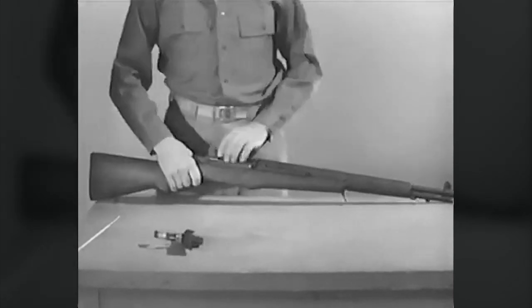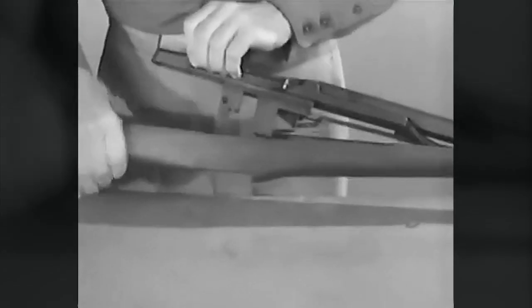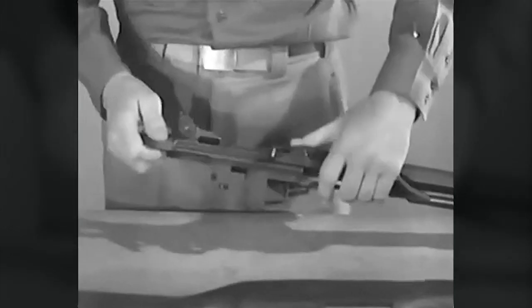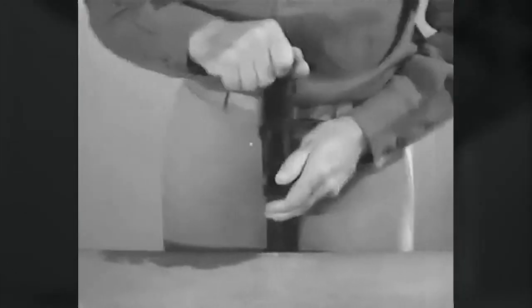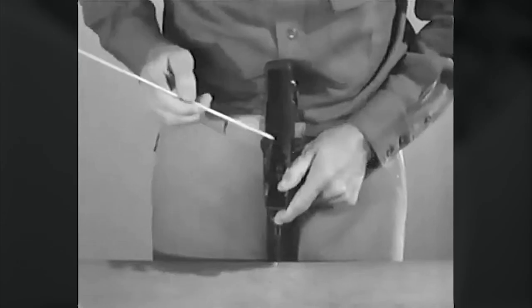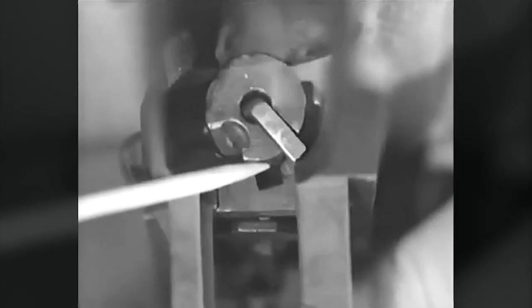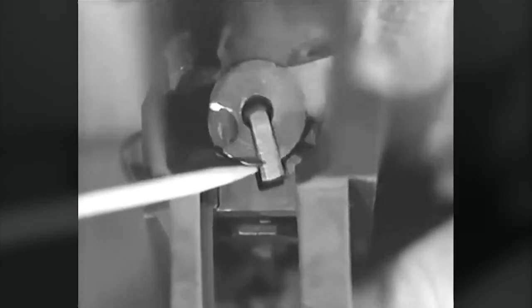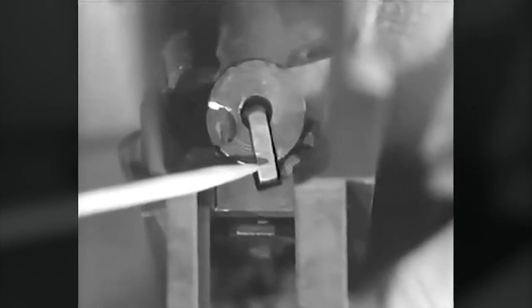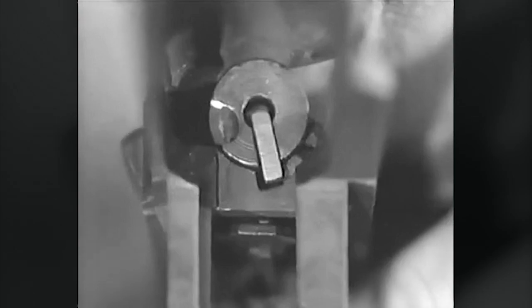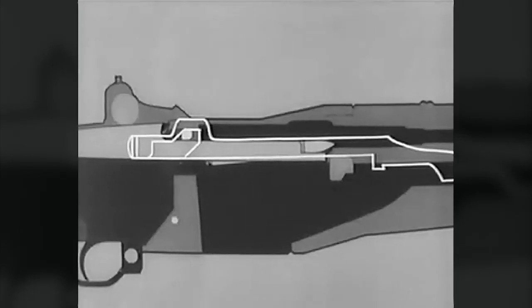Let's stop here a minute, remove the barrel and receiver from the stock, and take a look at what's happening at the rear of the bolt as it locks. Here we are. Now watch the firing pin tang line up with a cutout slot in the receiver bridge when the bolt rotates. Here's the complete action of locking.